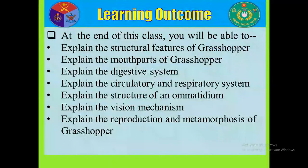At the end of this class, you will be able to: explain the structural features of Grasshopper; explain the mouth parts of Grasshopper; explain the digestive system; explain the circulatory and respiratory system; explain the structure of an ommatidium; explain the vision mechanism; and explain the reproduction and metamorphosis of Grasshopper.